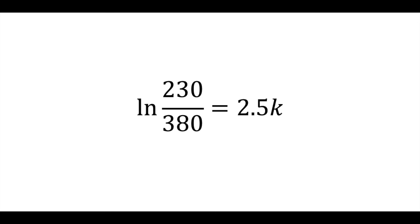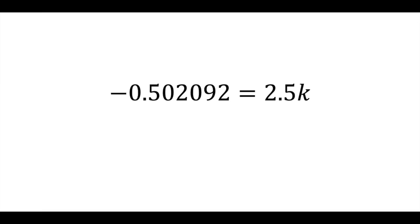ln of 230 over 380 is actually really close to negative 0.5. Divide both sides by 2.5, and K, our constant of cooling is essentially a very convenient negative 0.2.